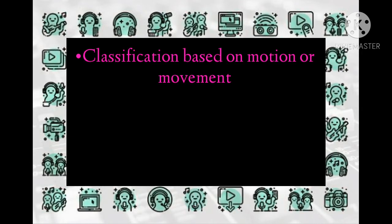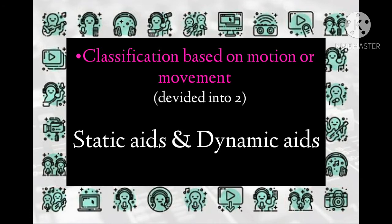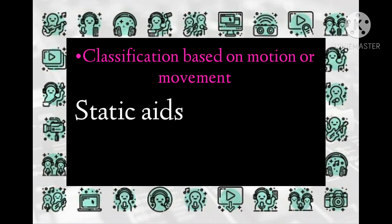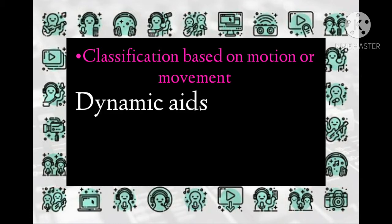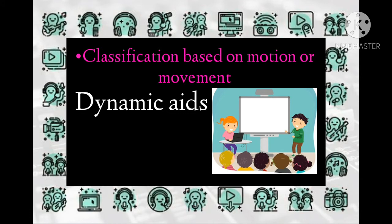Classification based on motion or movement: these are divided into two types — static aids and dynamic aids. Static aids are those used in classroom teaching which do not move; examples include charts, flashcards, slides, and OHP. Dynamic aids are those in which visuals or parts are capable of being made to move by mechanical principles; examples include working models, motion pictures, television, and computers.